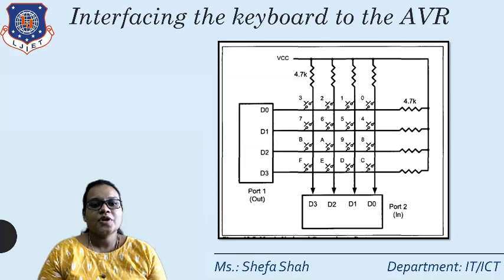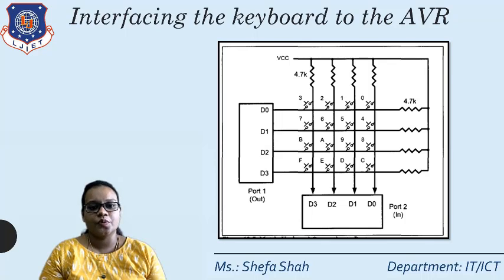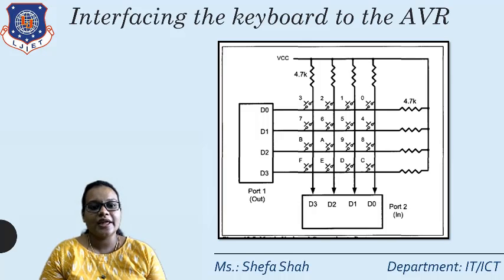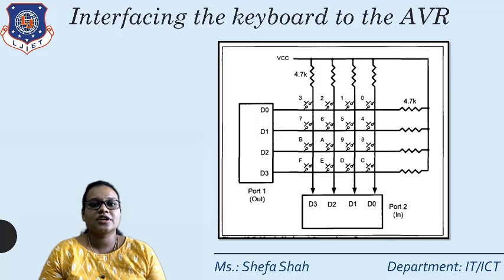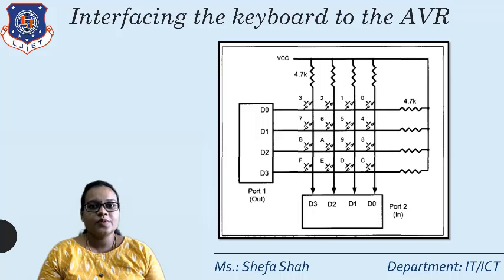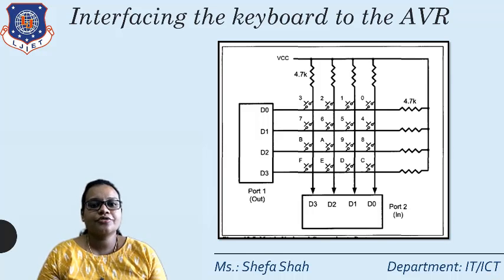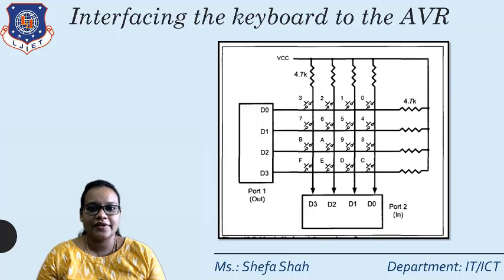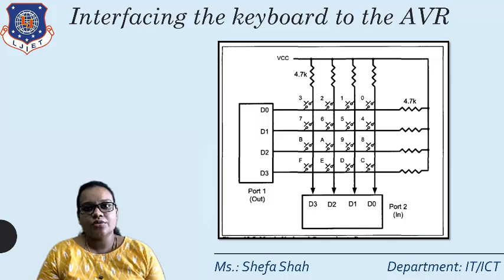As you can see in this figure, Port 1 is working as an output port and Port 2 is working as an input port. The keyboard switches are connected in a row and column configuration with the AVR. Port 2 has the keyboard columns attached to the ATmega32, and Port 1, the output port, has the rows of the keyboard connected to the AVR.